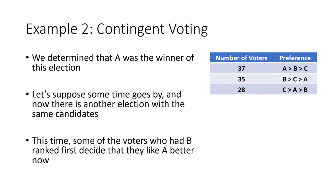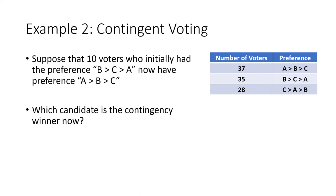Now suppose a new election occurs with the same candidates, and 10 voters who originally had B first, C second, A third have changed their minds and now prefer A first, B second, C third. This moves 10 voters from the B-first column to the A-first column, giving A 47 first place votes, B only 25, and C still 28.